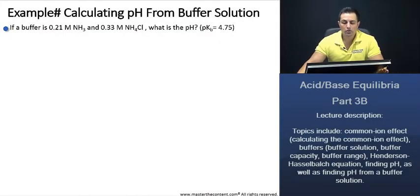If a buffer is 0.21 molar NH3 ammonia plus 0.33 molar ammonium, or NH4Cl, it's going to be ammonium. What is the pH? And they're giving us the pKb value.